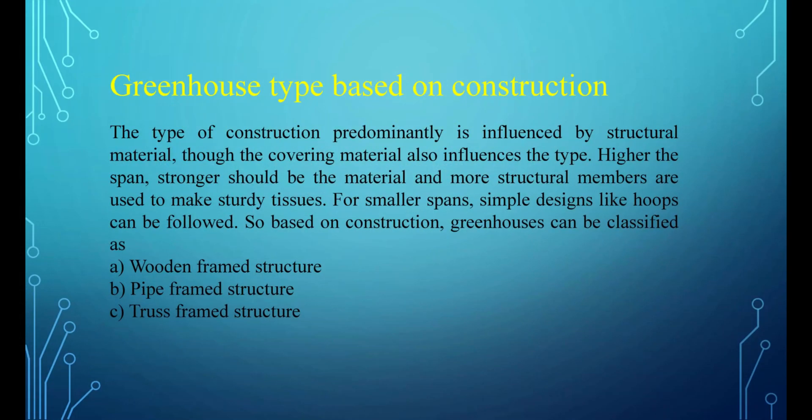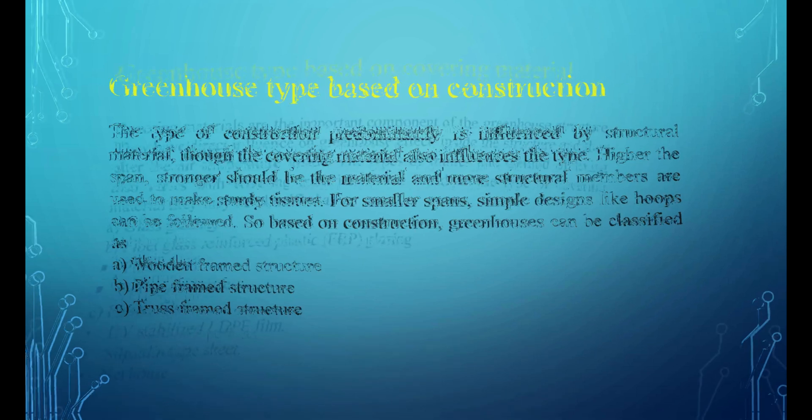The type of greenhouse construction is predominantly influenced by structural material, though the covering material also influences the type. The higher the span, the stronger the material should be, and more structural members are used to make sturdy structures. For smaller spans, simple designs like hoops can be followed. Based on construction, greenhouses can be classified as: A. Wooden-framed structure, B. Pipe-framed structure, and C. Truss-framed structure.